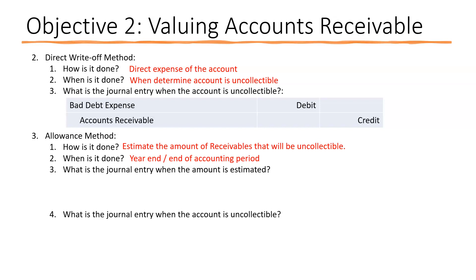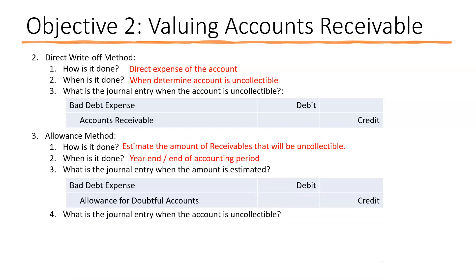The journal entry under the allowance method when the amount is estimated is a debit to bad debt expense and a credit to allowance for doubtful accounts — the same expense account as the direct write-off method, but using the contra account instead of directly reducing accounts receivable. At this point, you haven't identified specific uncollectible accounts yet.